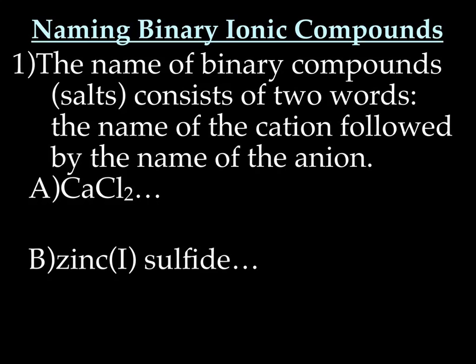Let's now learn how to name binary ionic compounds. The name of binary ionic compounds, which are also known as salts, consists of two words. You start with the name of the cation first, followed by the name of the anion. Let's try this — first one is CaCl2. The cation is Ca. Naming cations depends on whether it's from group 1A, 2A, or 3A or not, so look at your periodic table.